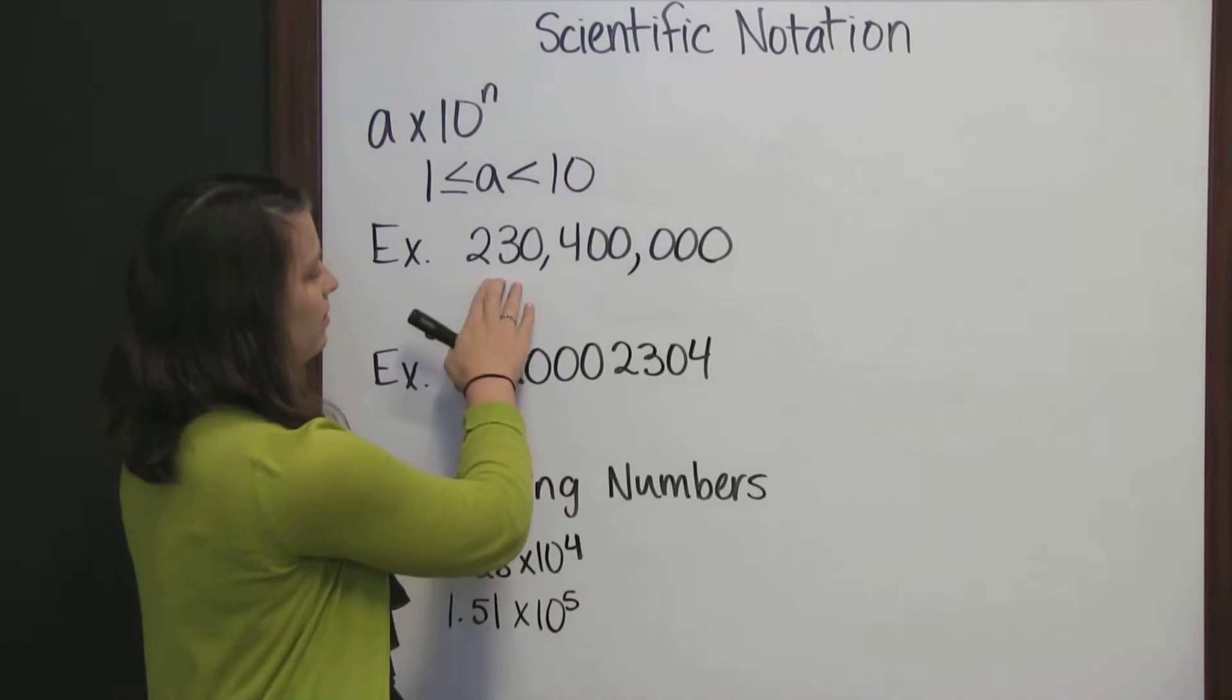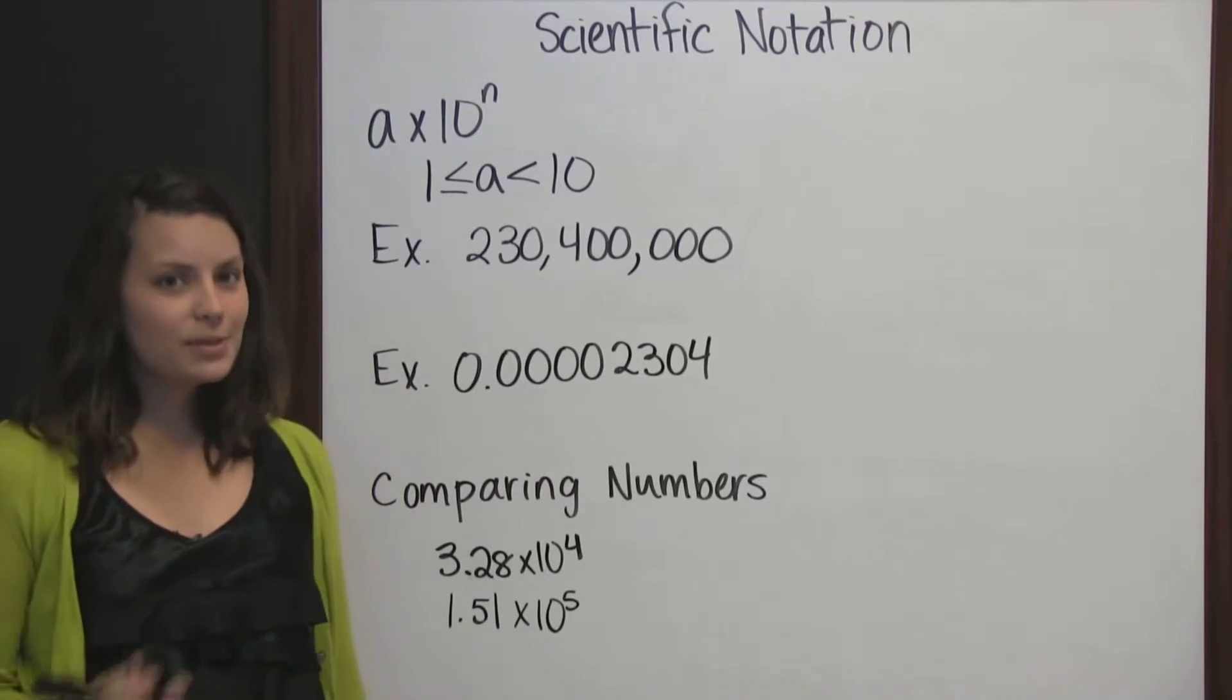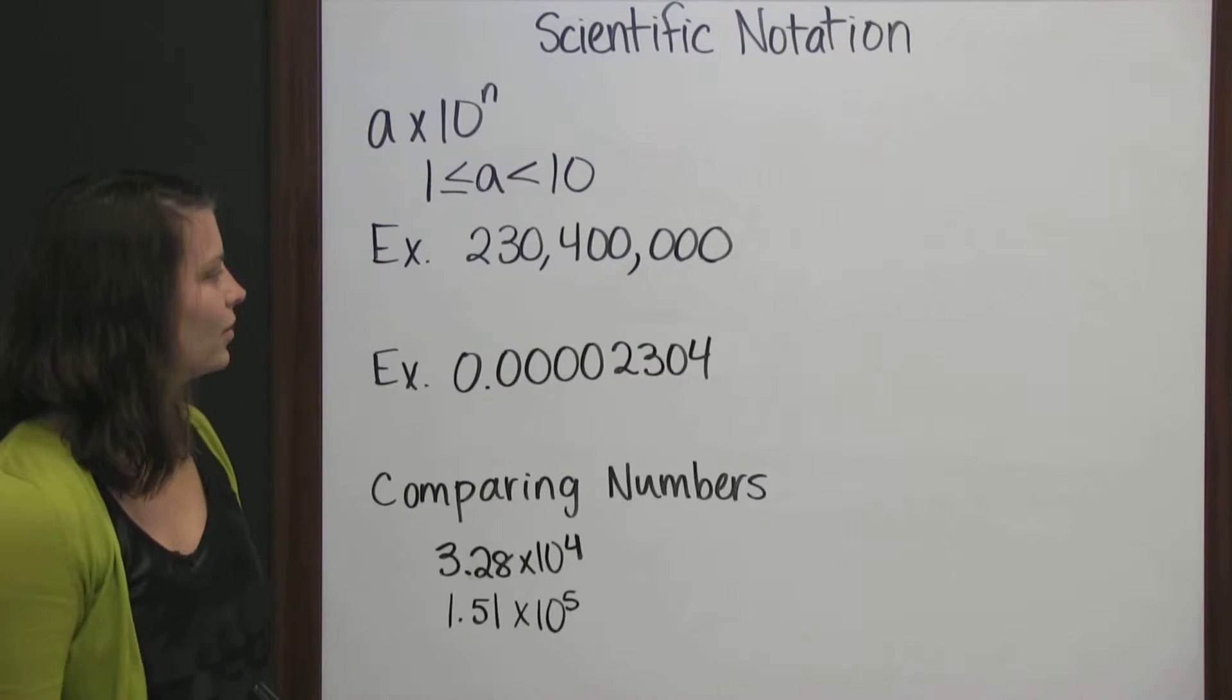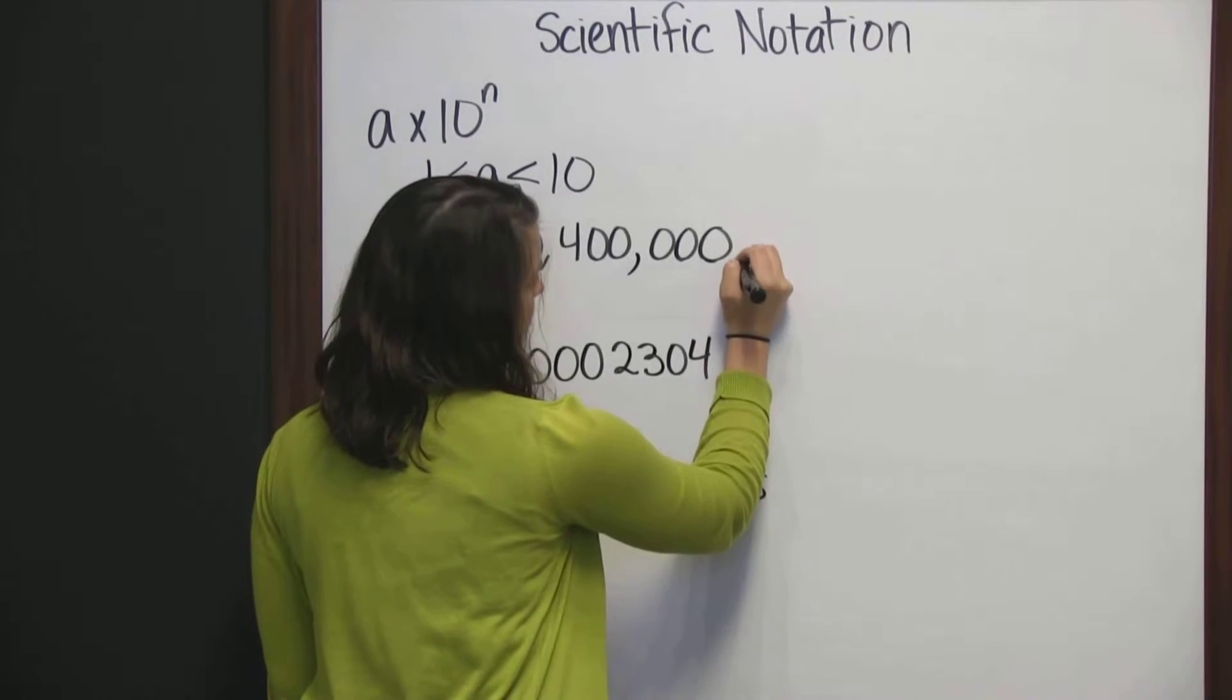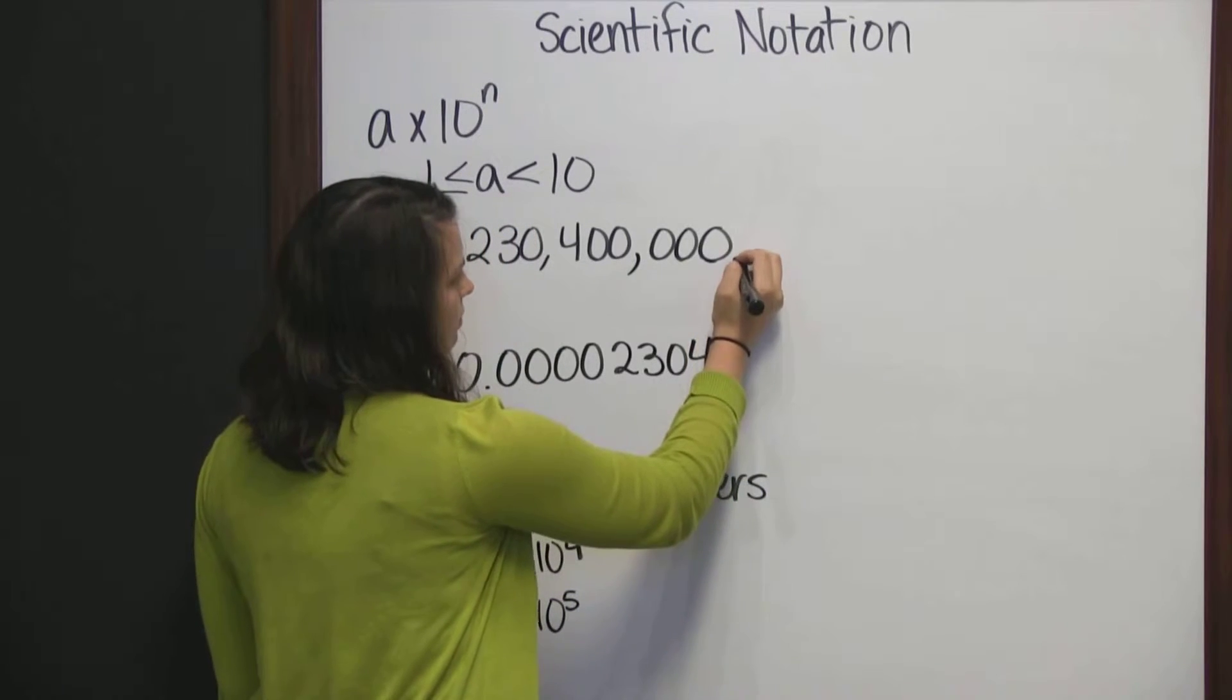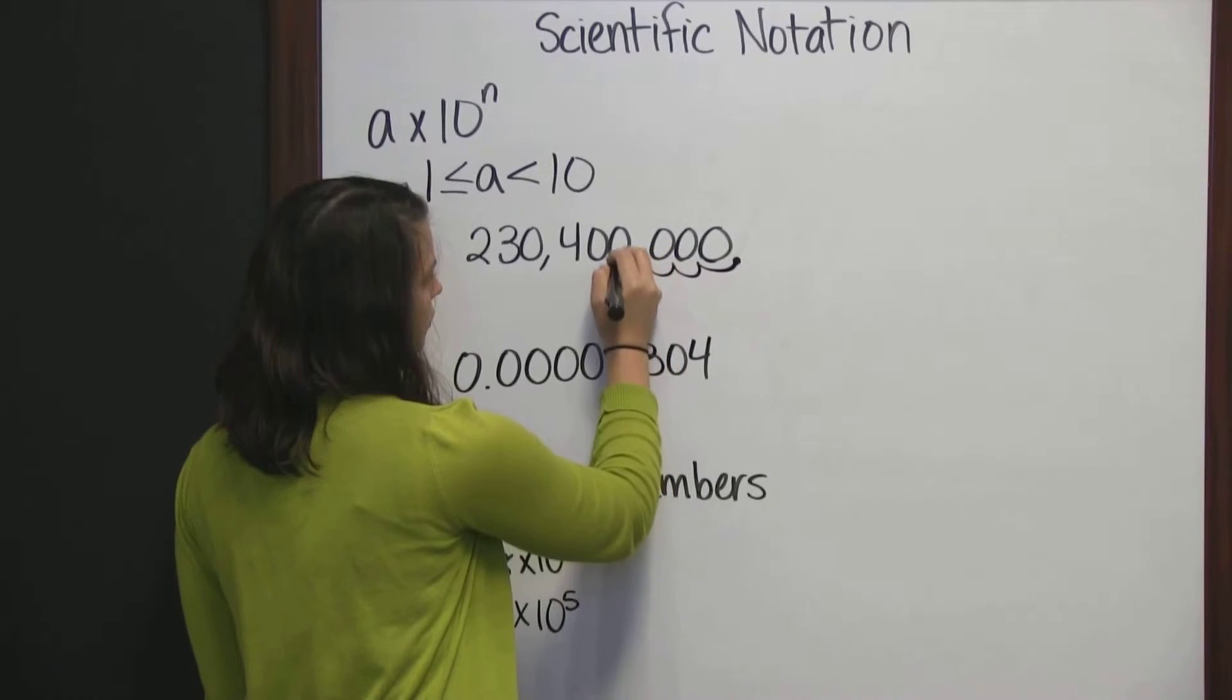Let's take this number, 230,400,000. It's a pretty big number. We can write this in scientific notation by taking our decimal, which is at the end of our number, and moving it 1, 2, 3, 4...